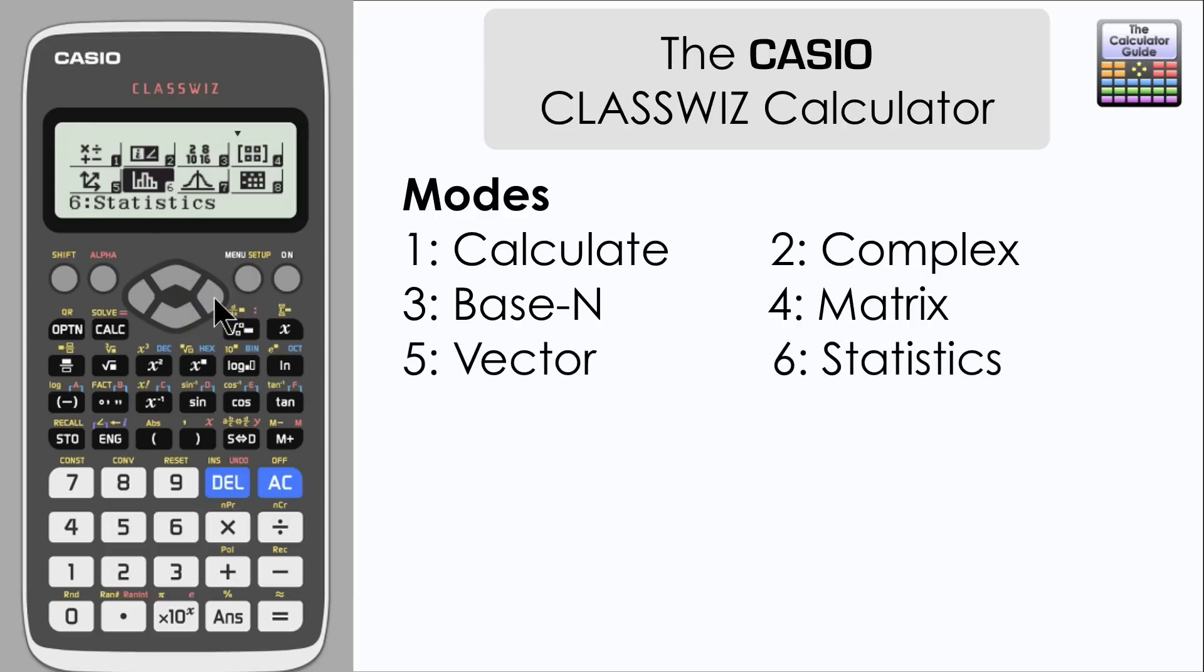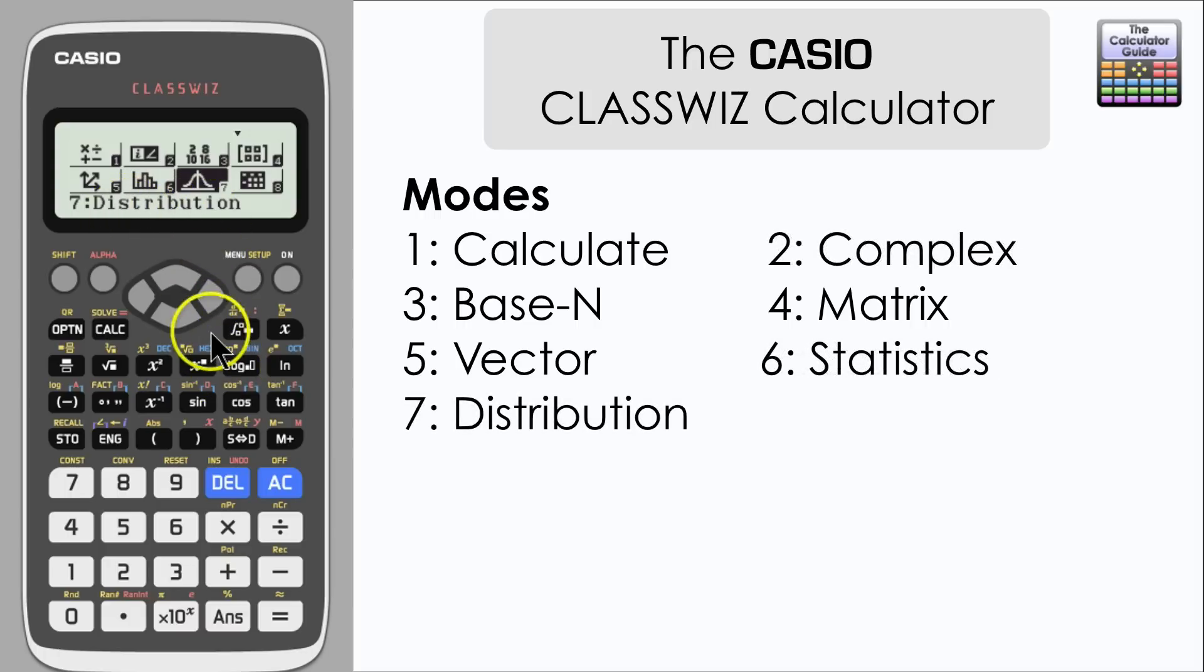Then we have the perhaps more familiar statistics mode and then a distribution mode. So let's just have a look at this distribution mode and see what it has inside. We have three functions here related to the normal distribution, two related to binomial distribution and then two more features related to the Poisson distribution.